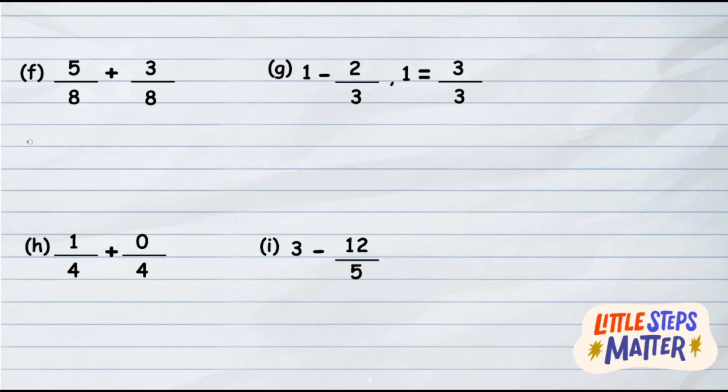Now let us take another question: 5 upon 8 plus 3 upon 8. Denominators are same, so add the numerators. 5 plus 3 gives 8 upon 8, and 8 upon 8 gives the answer 1.